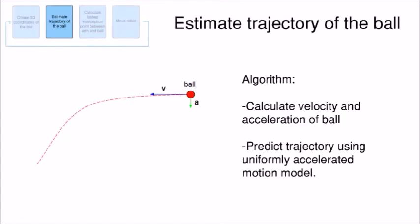Next, we calculate the velocity and acceleration of the ball based on the ball history. Then, we predict its trajectory using a uniformly accelerated motion model.